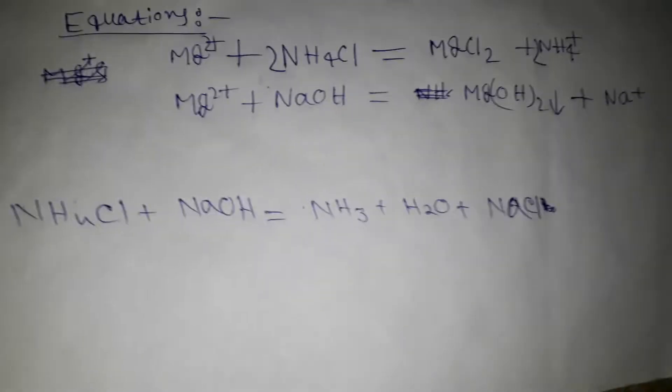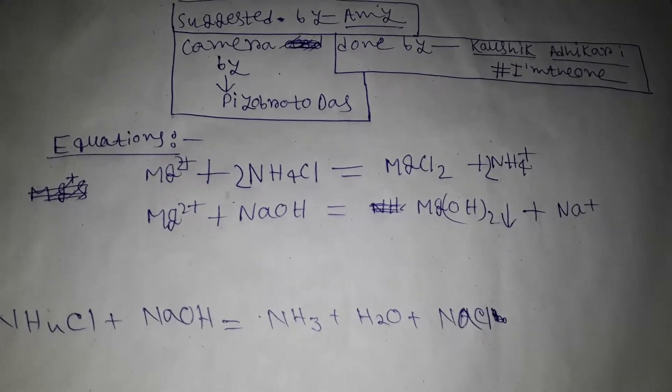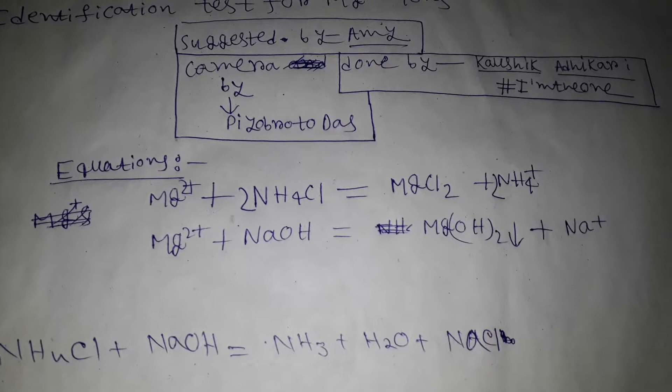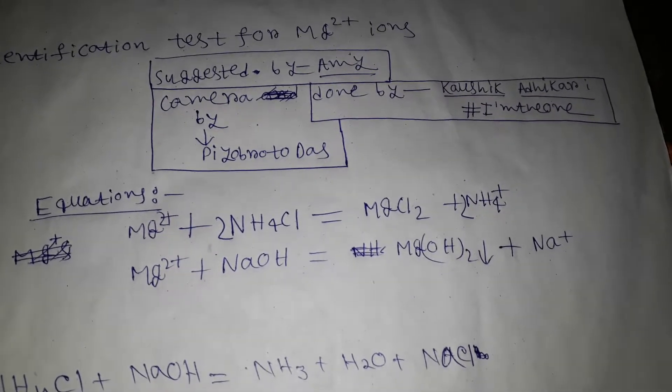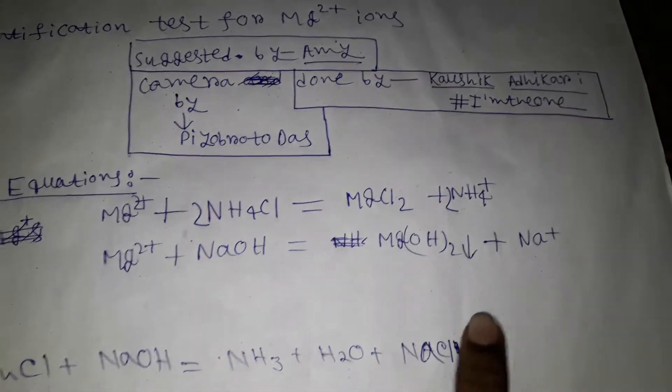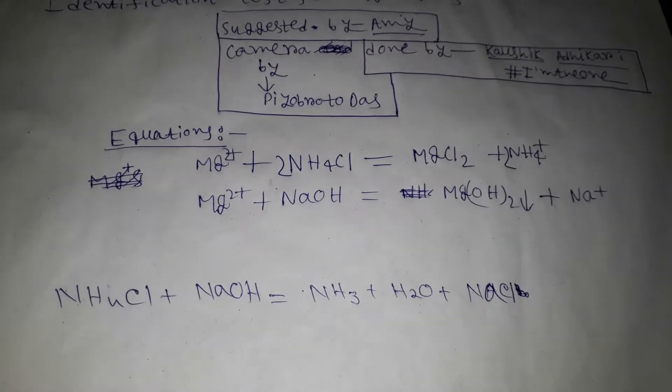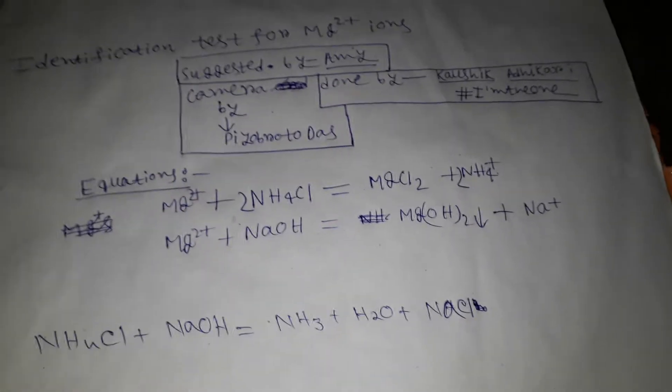So what happened? Mg2+ reacts with NH4Cl to produce MgCl2 and NH4+, and Mg2+ reacts with NaOH to produce magnesium hydroxide, the white precipitate, and sodium ions. Sometimes ammonium chloride reacts with sodium hydroxide to produce ammonia, so be careful in this reaction.